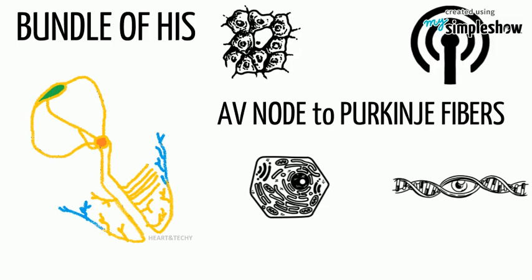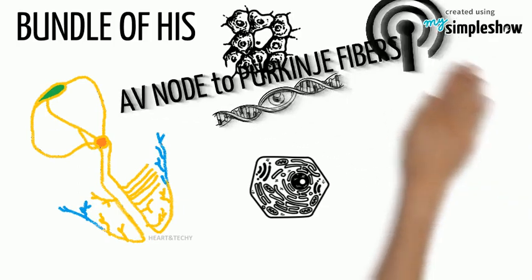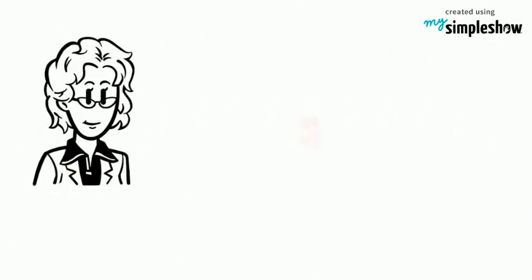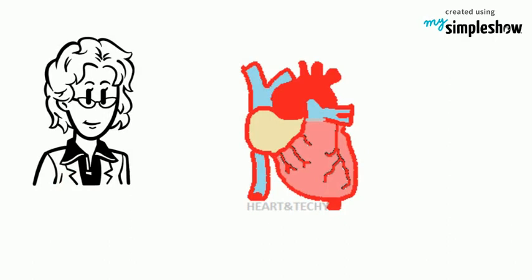The Purkinje fibers are able to rapidly transmit cardiac action potentials from the atrioventricular bundle to the myocardium of the ventricles. This rapid conduction allows coordinated ventricular contraction, and blood is moved from the right and left ventricles to the pulmonary artery and aorta respectively.